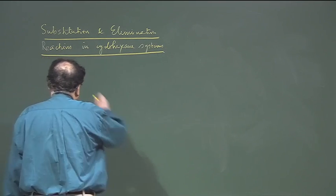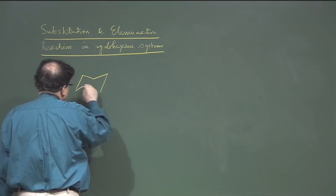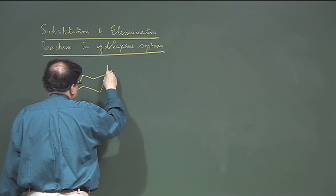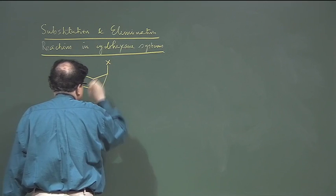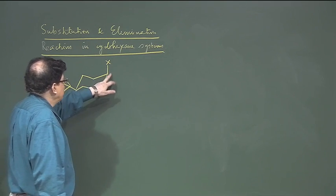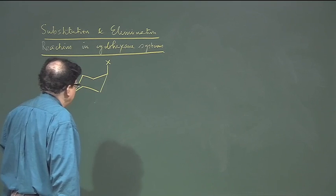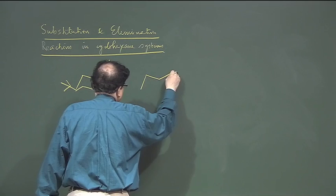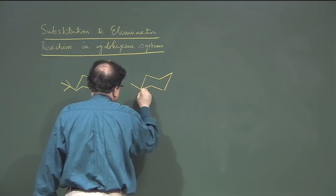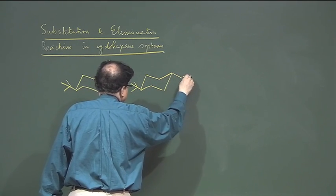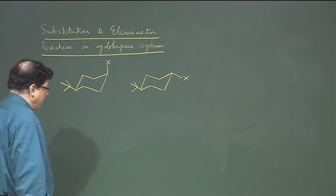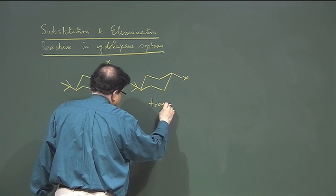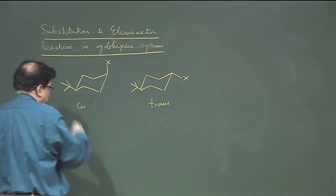If we take a cyclohexane — suppose this is 4-tert-butylcyclohexane with a substituent with a leaving group at C1 — this can exist in two diastereomeric forms: one is the cis isomer, another is the trans isomer. Remember the t-butyl group is there so that the conformations are locked. If it is not there, they can flip to each other.